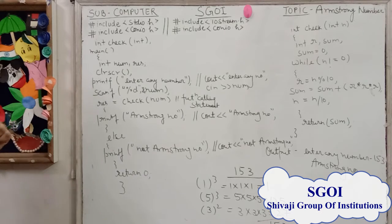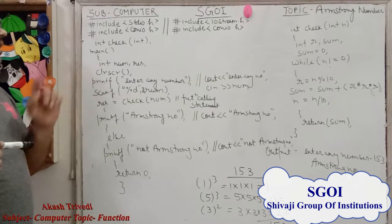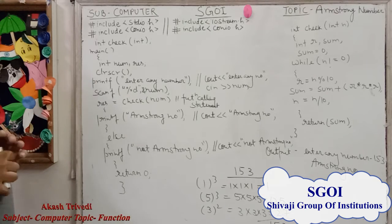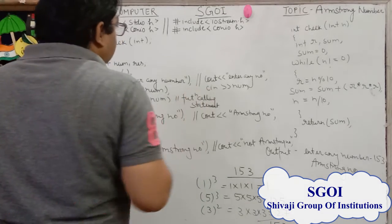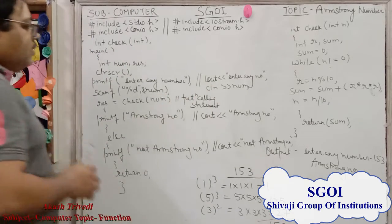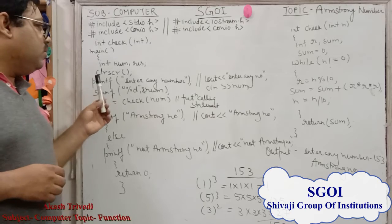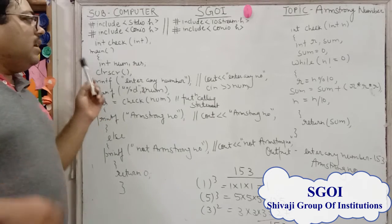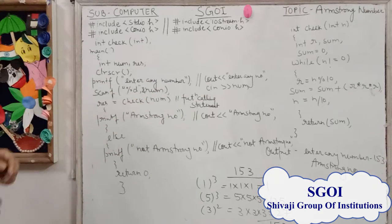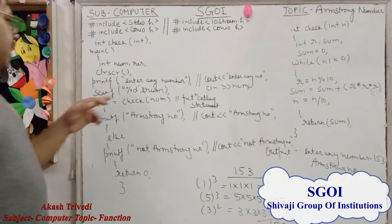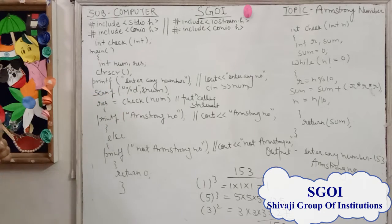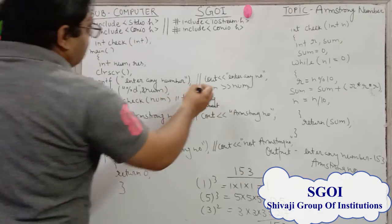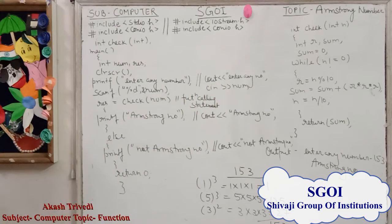Then we give a message using printf, "enter any number". In C++ we use cout to print the message. In C we use scanf with %d and the address modifier &num to read the value into num, and in C++ we use cin >> num to store the value in num.